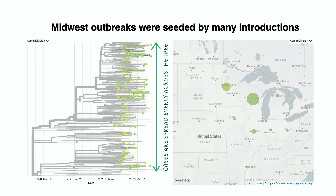With sequences from the Midwest, we see that cases from this area are spread evenly across the tree, rather than forming a series of tight clusters. This tells us that there are many independent introductions to these states, with several different transmission chains circulating simultaneously.